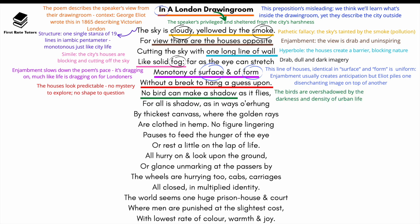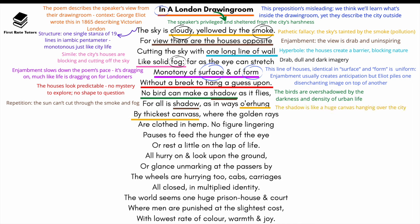The reference to how there's no bird that can make a shadow shows that birds are overshadowed by the darkness and density of urban life. The repetition of 'shadow' illustrates that the sun — another aspect of nature — can't cut through all the smoke, fog, and pollution, giving us a really dark image of this city. The reference to 'overhung by the thickest canvas' means the shadow cast is like a huge canvas hanging over the city. The contrast between 'golden rays' and man-made pollution shows nature — vibrant and colourful — being blocked out by overpowering man-made objects and pollution.